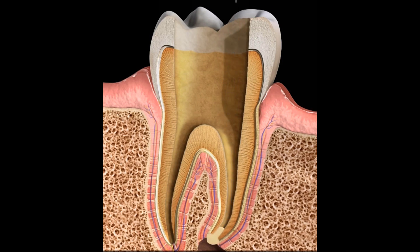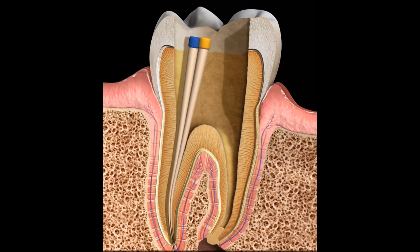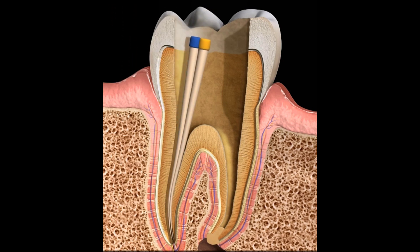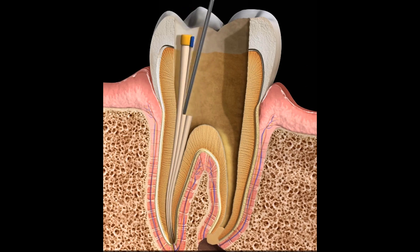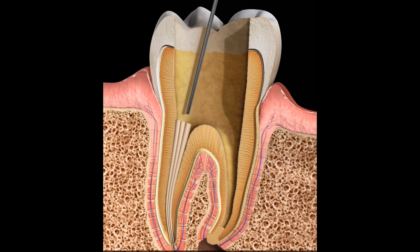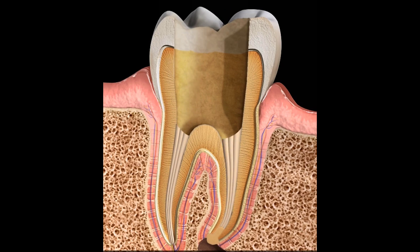A material called gutta percha is then used to fill and tightly seal the root canal system. This material is bioinert, so it does not react with the body. It is inserted, impacted, and cut to the desired shape.